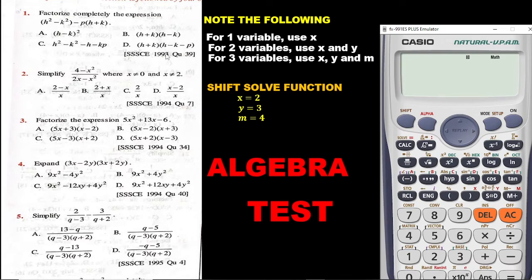So in a question, if you have, let's say, B and C — two letters — if the question has only two variables, we are going to replace those variables with X and Y. And then for three variables, we are going to use X, Y, and M. So let's go to the first question.